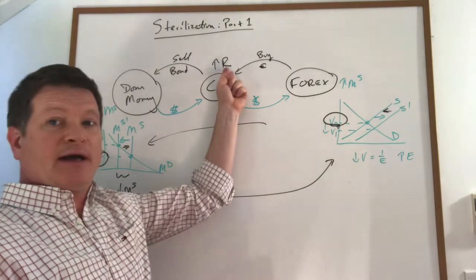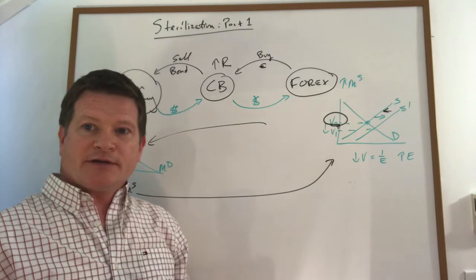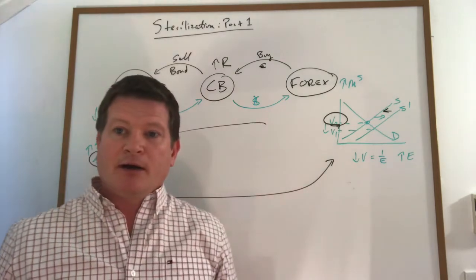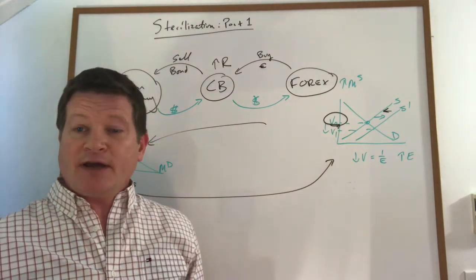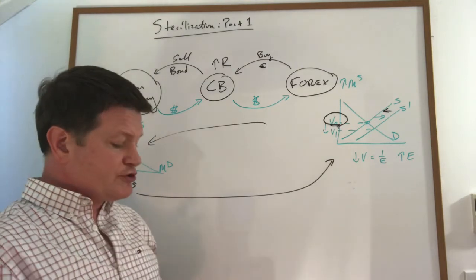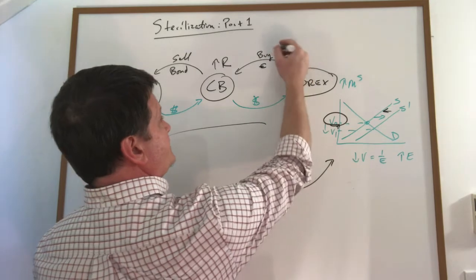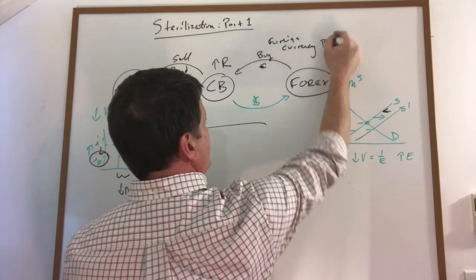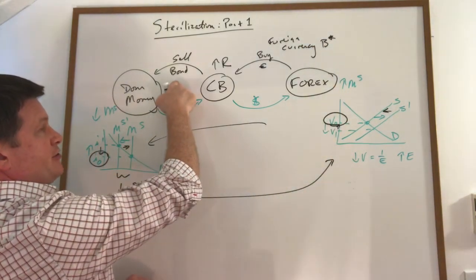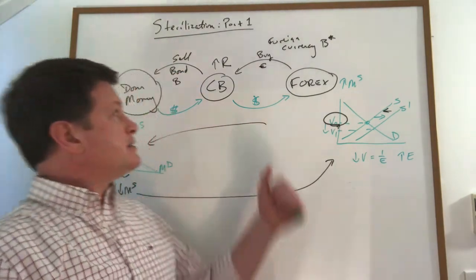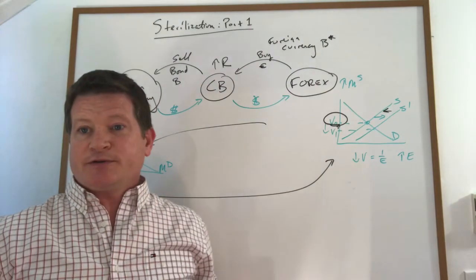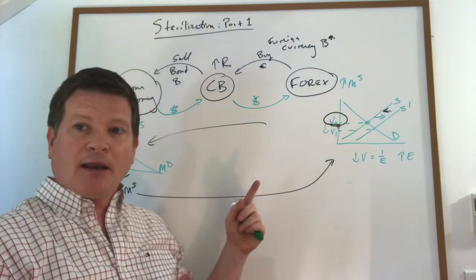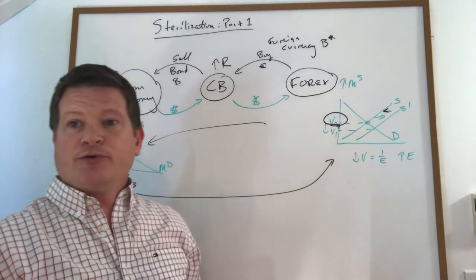But if you just want to buy reserves without affecting either, you can use sterilization. One last comment: in the example I'm giving, the central bank bought currency. In reality, it does buy some currency, but usually it buys euro-denominated bonds or foreign currency bonds — let's call them B-star — and it trades domestic currency bonds. So if those two are not perfect substitutes for one another, then there is a little bit of room to sterilize there as well. Not a lot, but there is some. And we'll cover that in part two a little later.